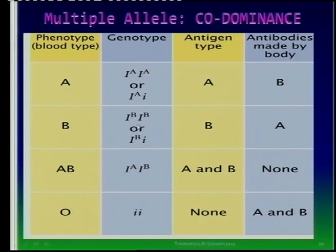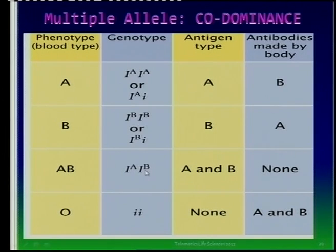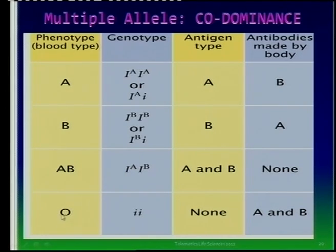When we get the dominant A allele with the dominant B allele, neither is dominant over the other - we have two different alleles, A and B. Both alleles express themselves in the phenotype, giving us blood group AB. With blood group O, we have two recessive genes. This is why O is the universal donor and AB is the universal acceptor.